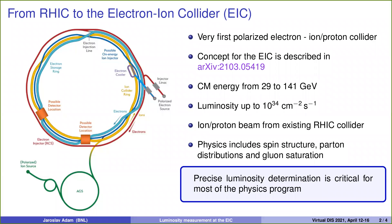The electron ion collider will be the very first collider of electrons on protons or ions. The concept is described here and it will be built upon the existing RHIC collider, reusing instrumentation for protons and ions.